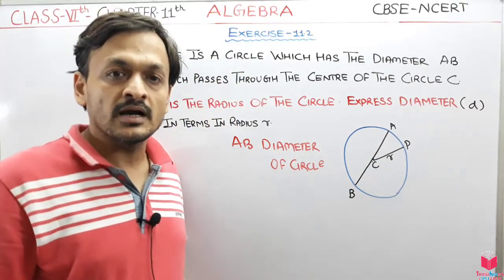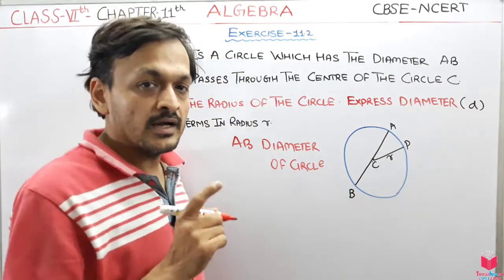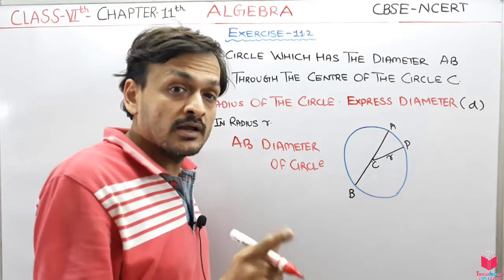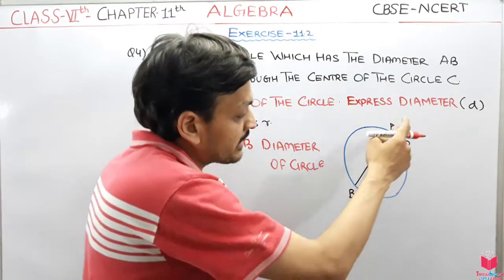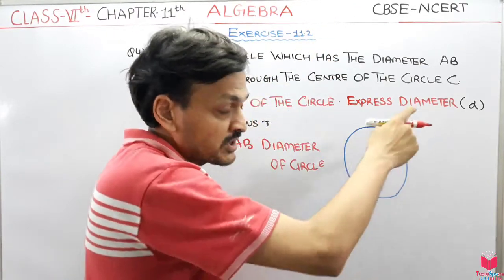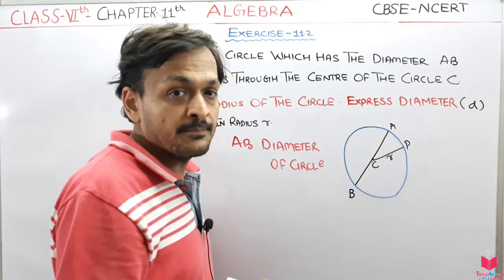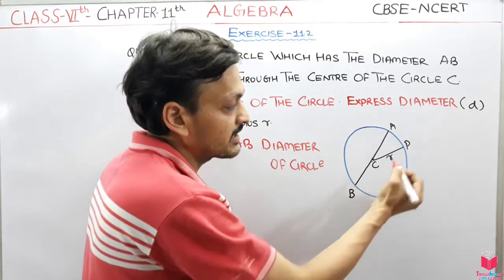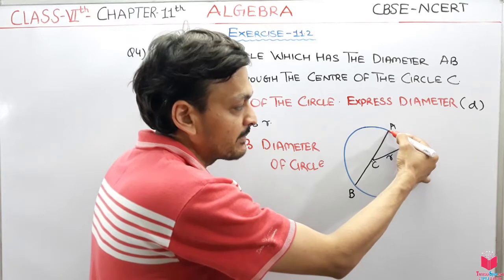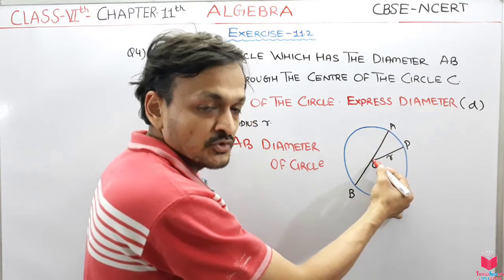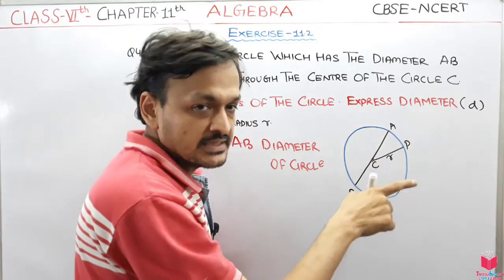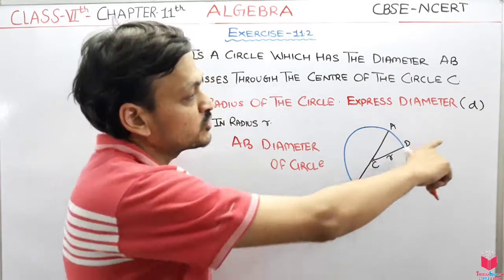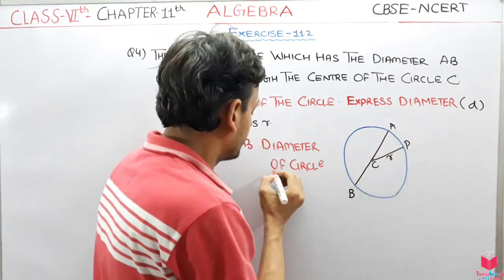Diameter क्या होता है circle का? अगर मैं एक line खींच दूँ, और वो center से होके पास होती जाए, दोनों boundaries पे — line खींची boundary से start करके boundary पे ले गए, और वो center से पास होती गई — तो उसे हम diameter कहते हैं। जो इसे represent कर रहे हैं वो है D।